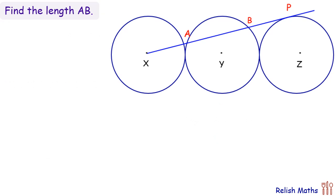We will join ZP, that is the center of the circle to point P. As radius is perpendicular to tangent, the angle at point P is 90 degrees.